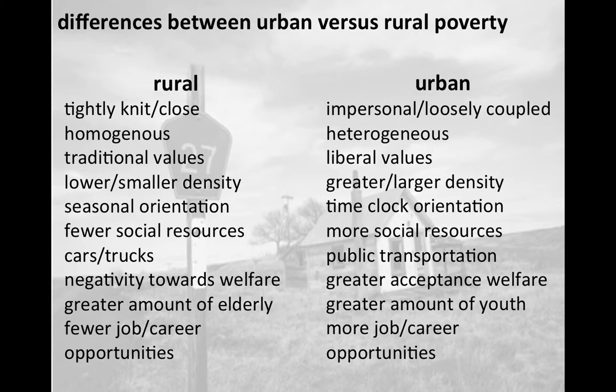There may not be any Hispanic families, African-American families, Asian-American families, or even American Indian families — it may just be a whole community of white people, or at least what appears to be. In urban areas there is more heterogeneity and you do find diversity not just in race and ethnicity, but also in age, religious background, sexual orientation, and disability.